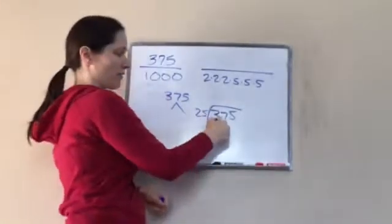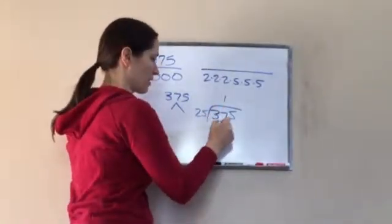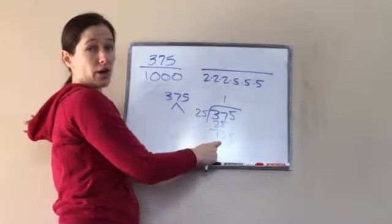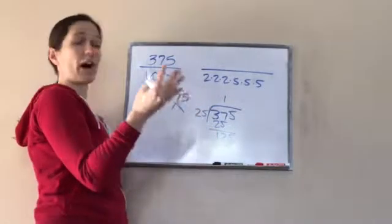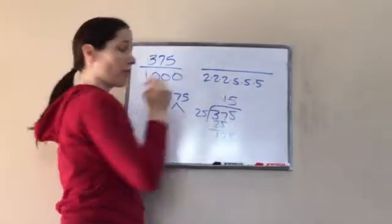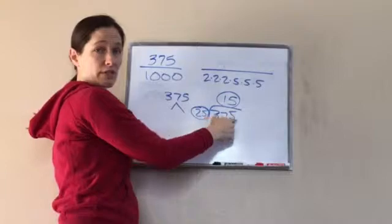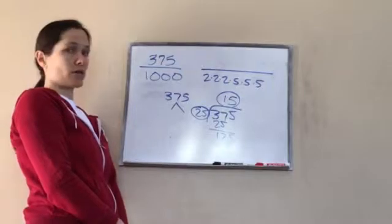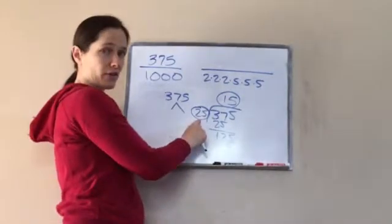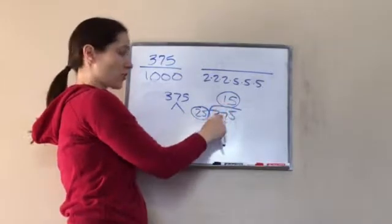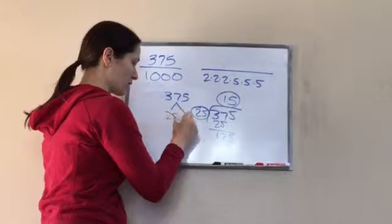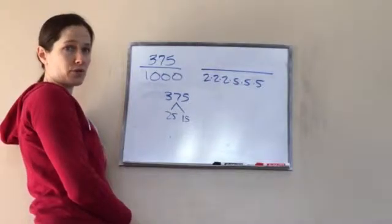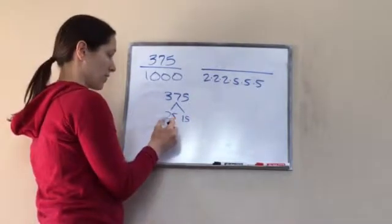I'm going to take 25, divide 375 by 25 and see what our answer is going to be. How many 25s go into 375? Five of them. So 25 times 15 equals 375. Can it keep reducing, or are those prime numbers? 25 is not a prime number, and neither is 15. What will go into 25? 5 times 5 — are those both prime? Yes. Means we're done with that branch.